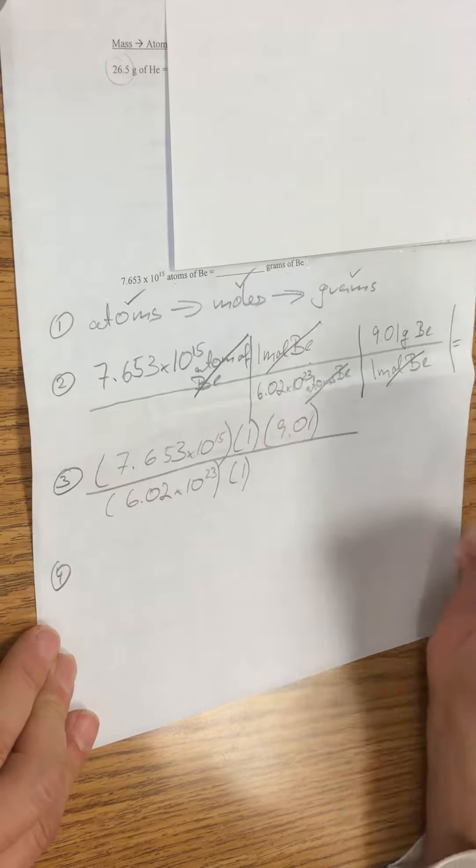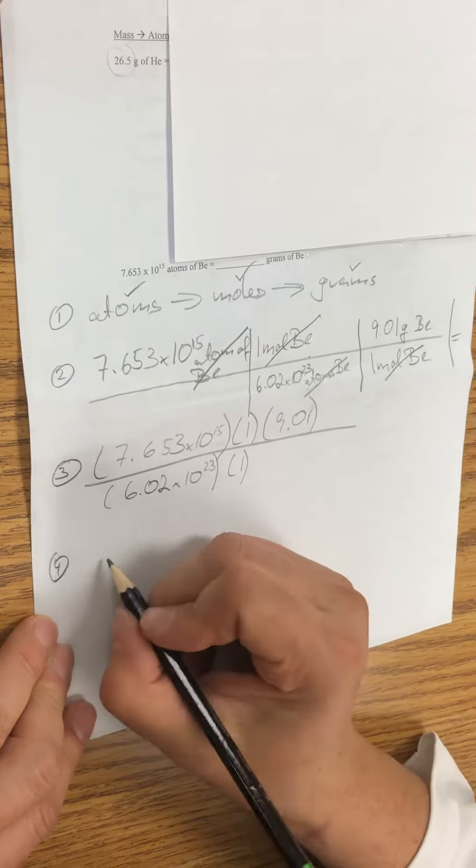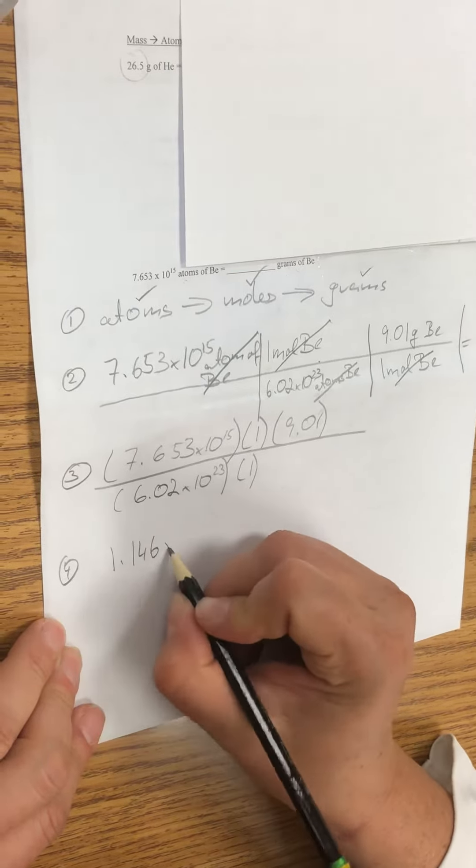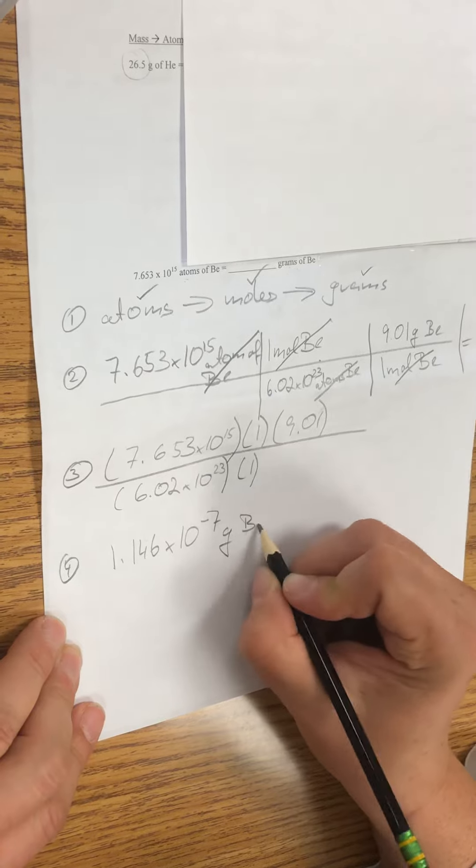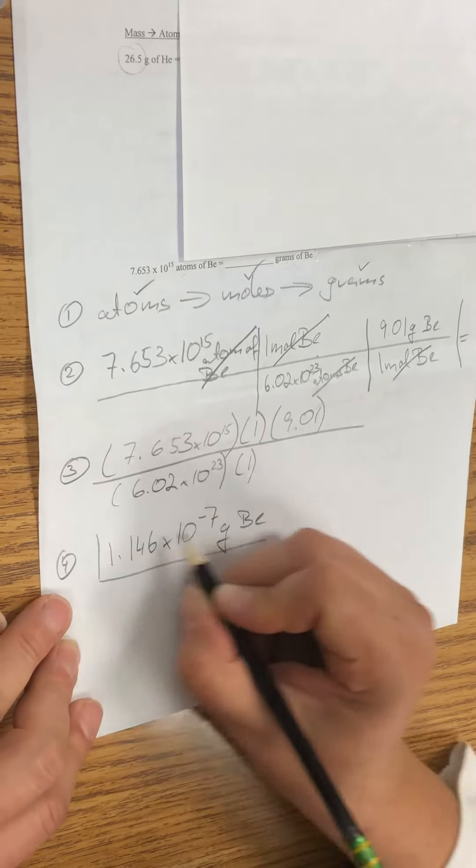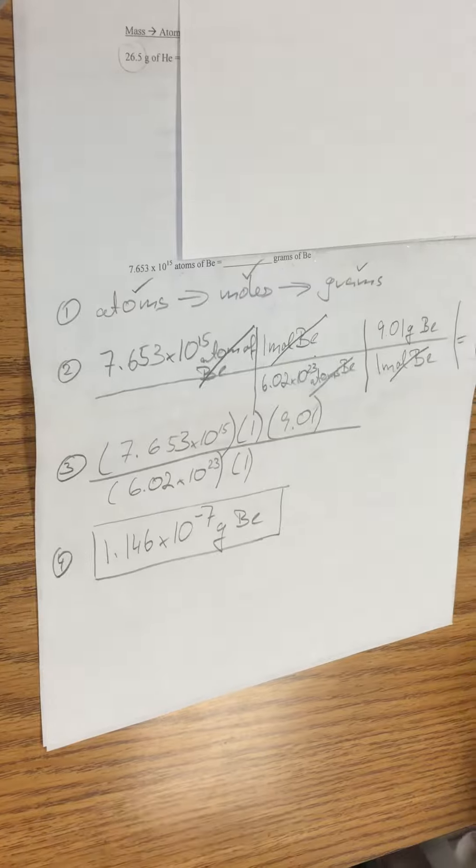For step 4, you calculate—plug it in—and you should get something like 1.146 times 10 to the negative 7 grams of beryllium, which is a very small amount. And this is the end of your column.